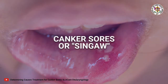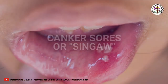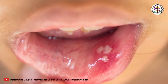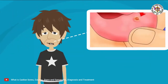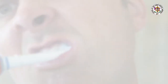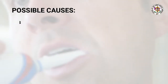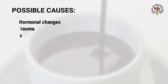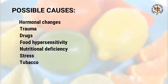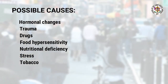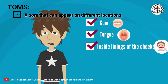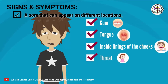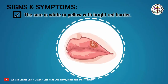Canker sores have similarity in appearance with fever blisters but usually affect adults rather than children. One or more sores can appear at any time and hurt especially when food touches them. The cause of aphthous ulcers is unknown, with many factors implicated including hormonal changes, trauma, drugs, food hypersensitivity, nutritional deficiency, stress, and tobacco. A sore can appear on the tongue, roof of the mouth, or below the gums.